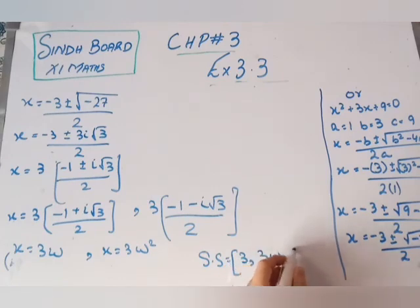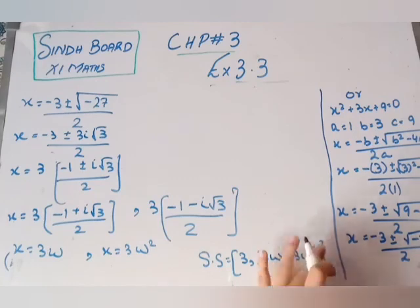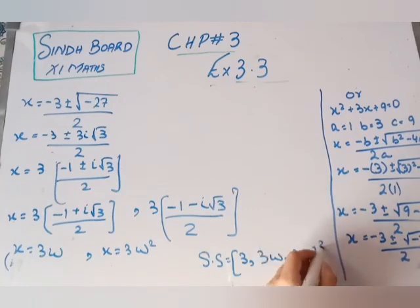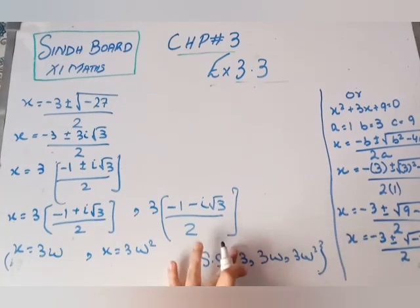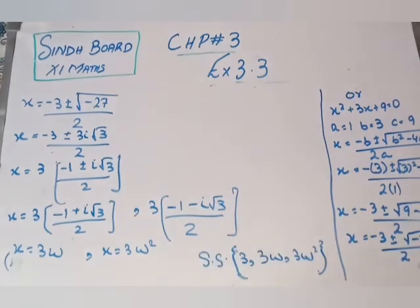So we write both values in the solution set with curly brackets. The solution set is {3, 3ω, 3ω²}.